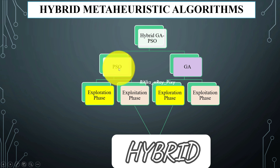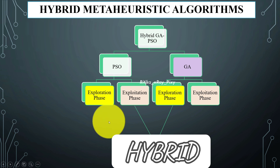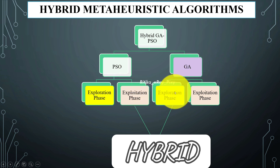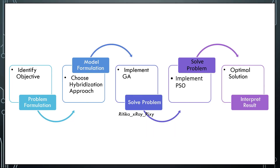Particle swarm optimization is good at exploring the search space and discovering new solutions quickly, but sometimes it gets stuck in local optima and struggles to exploit solutions. Genetic algorithms are good at global exploration. PSO algorithms are good at local exploitation and fast convergence. So we will use the acceleration phase from genetic algorithm and from particle swarm optimization algorithm. First we identify the objective.